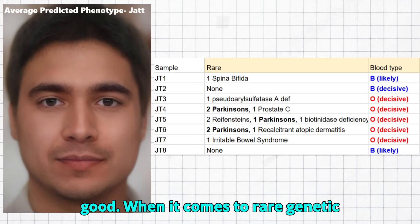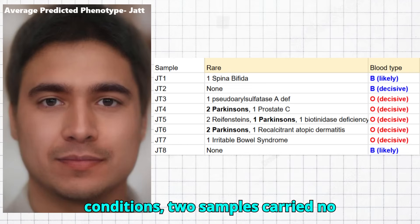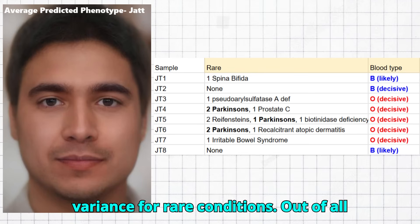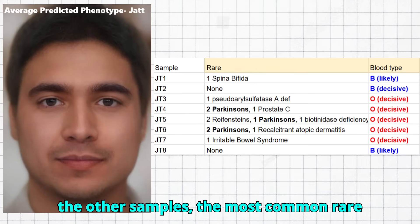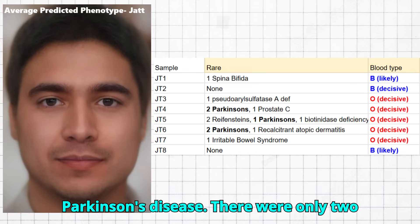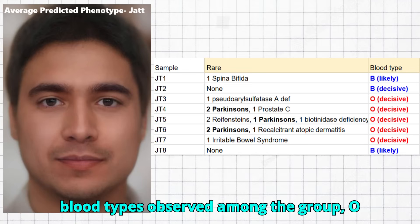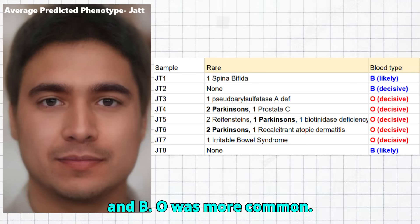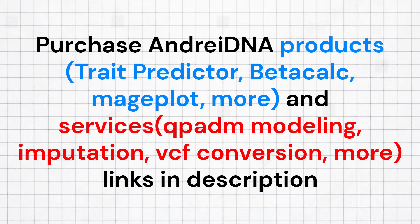When it comes to rare genetic conditions, two samples carried no variance for rare conditions. Out of all the other samples, the most common rare condition to carry risk variance for was Parkinson's disease. There were only two blood types observed among the group, O and B. O was more common. You can purchase my tools and services from the links in the description of the video. Thank you for watching, goodbye.